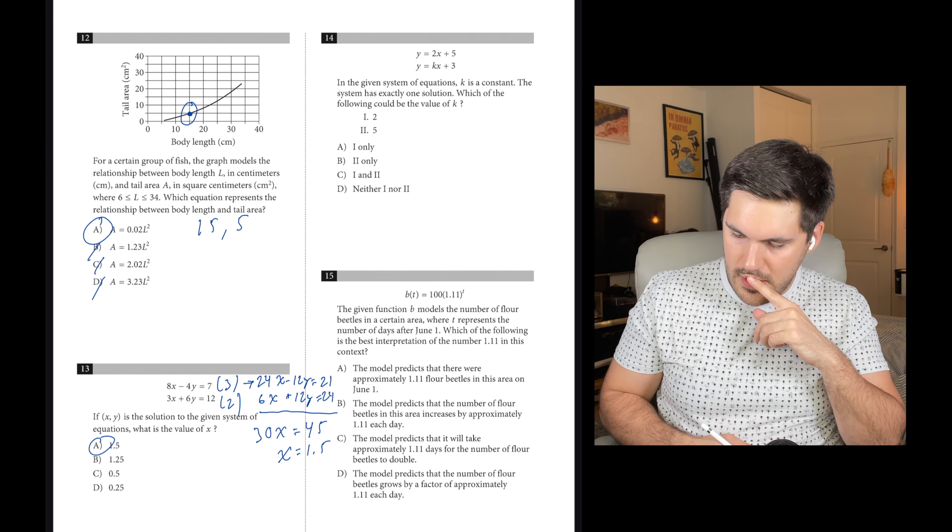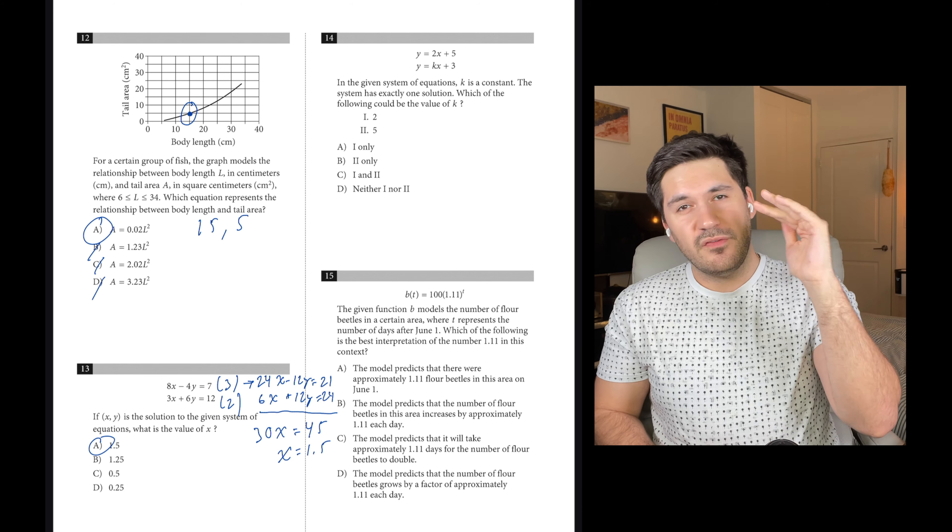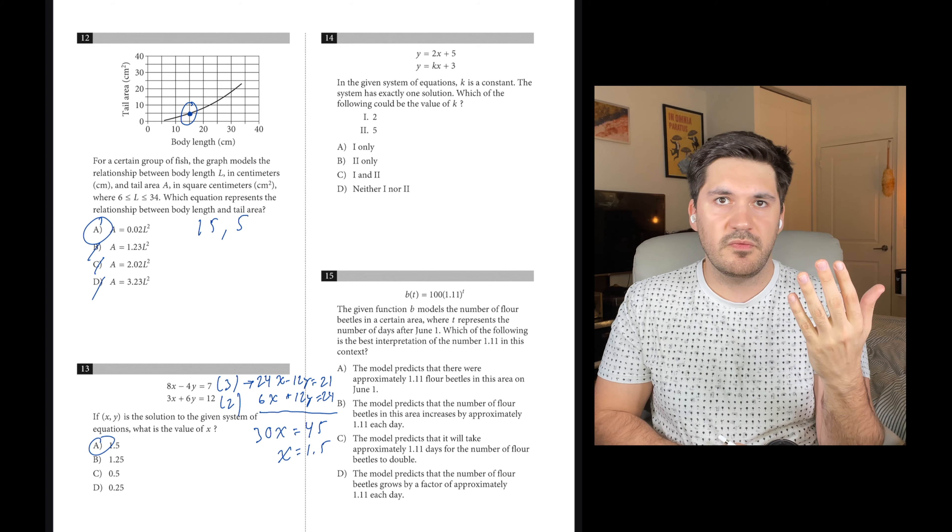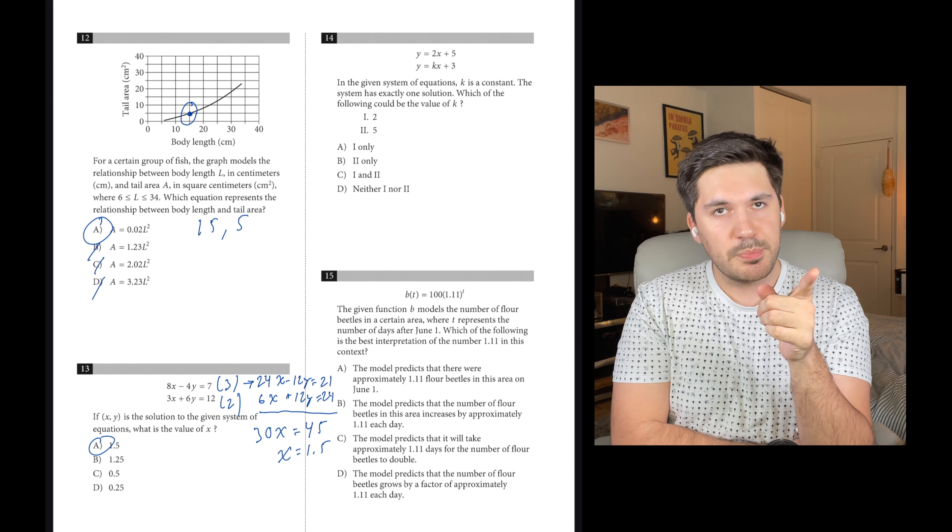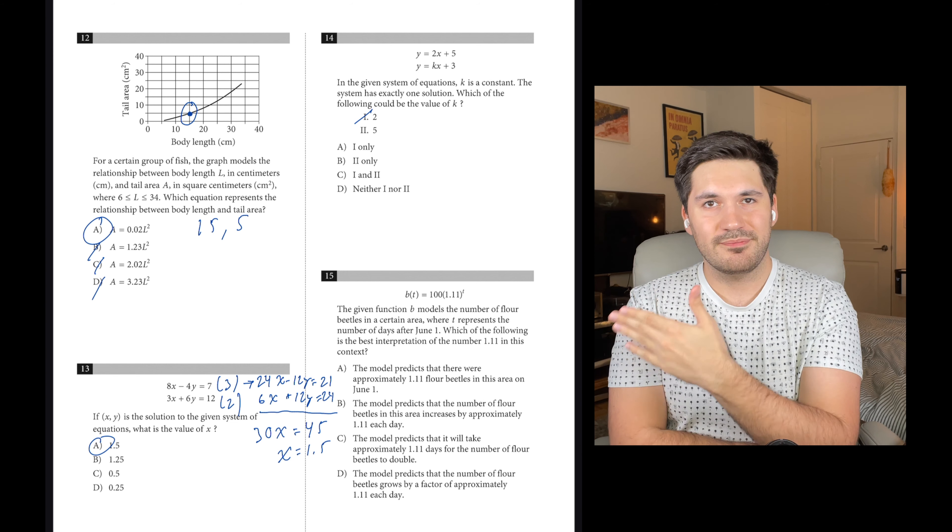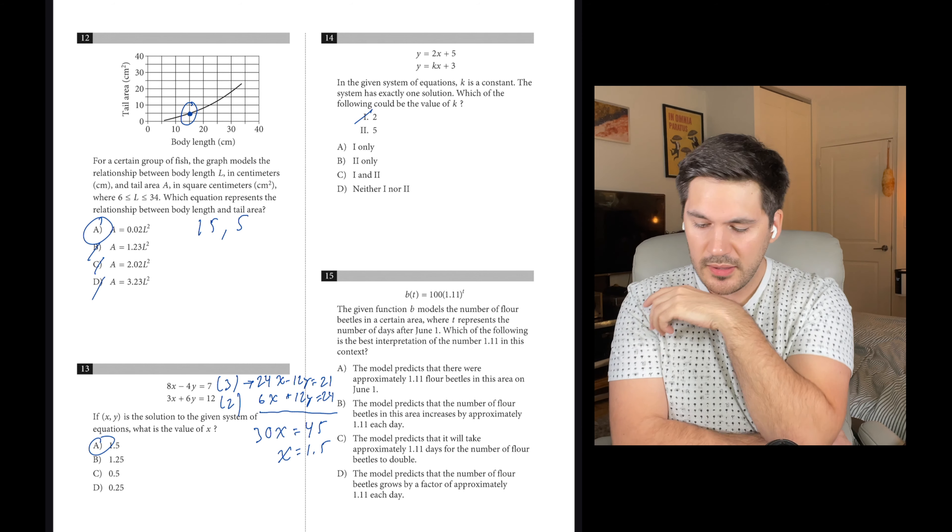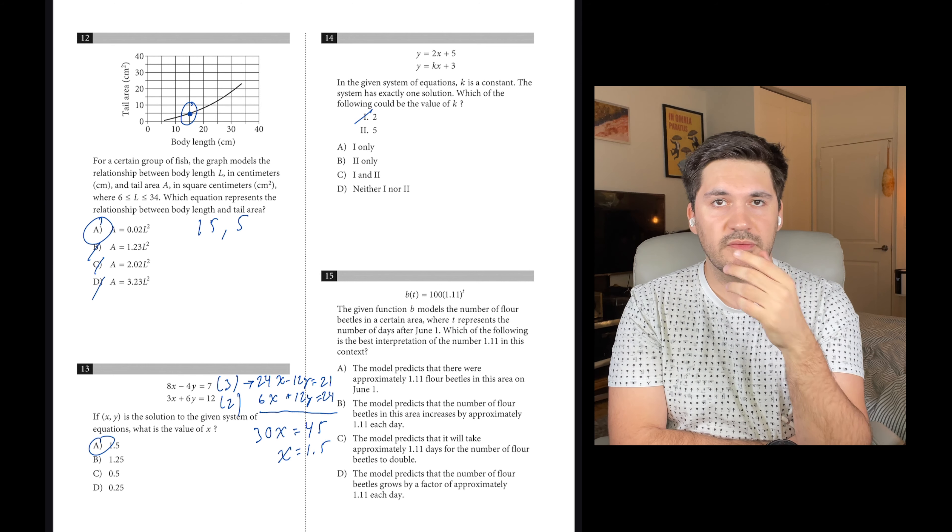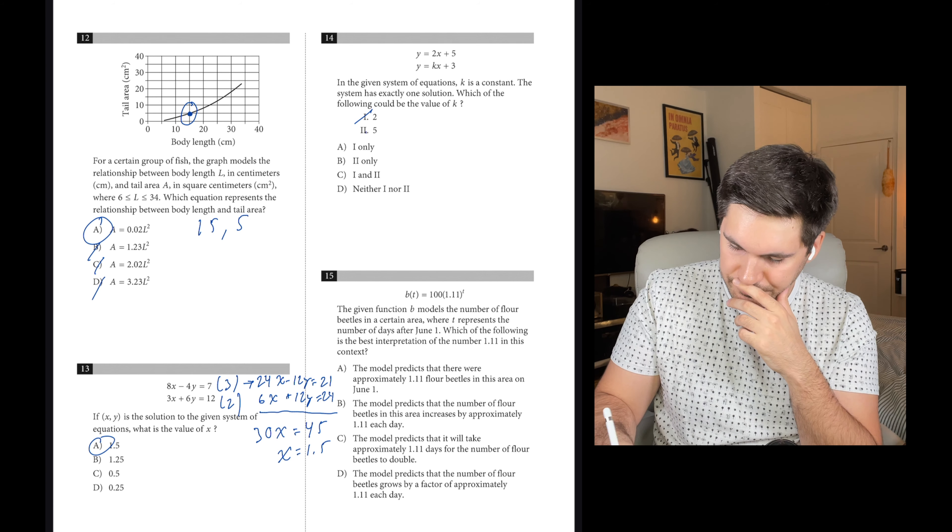Number 14, we have a system of equations. There's one solution. This is an important piece of information. That means they crisscross somewhere. They're not parallel, nor are they the same line. Which of the following could be the value of K? It cannot be 2 because 2 would make it so that they have the same slope, which would make them parallel. But parallel lines never cross. Can it be 5? Yeah, because the second equation doesn't become a multiple of the first equation. They don't end up having the same slope. So yeah, it could be 5. Our answer is B.